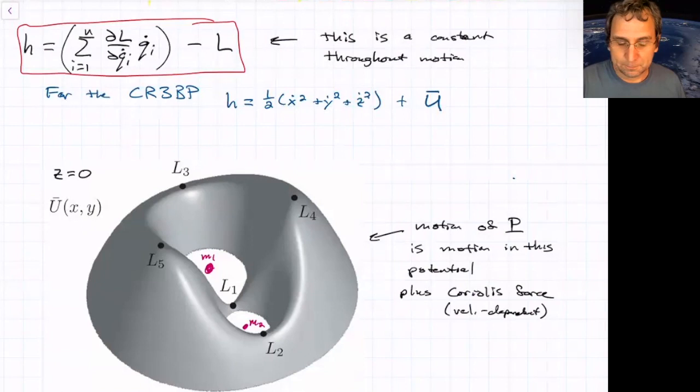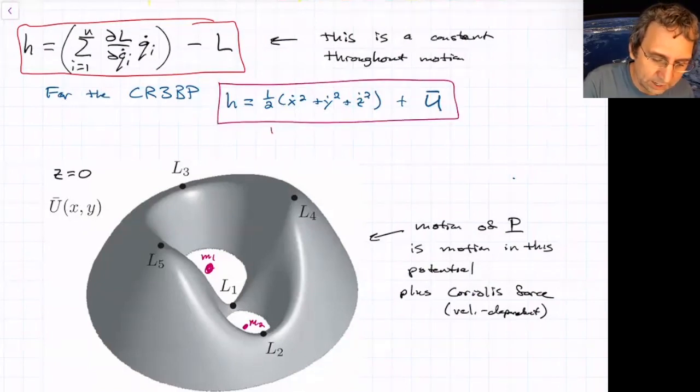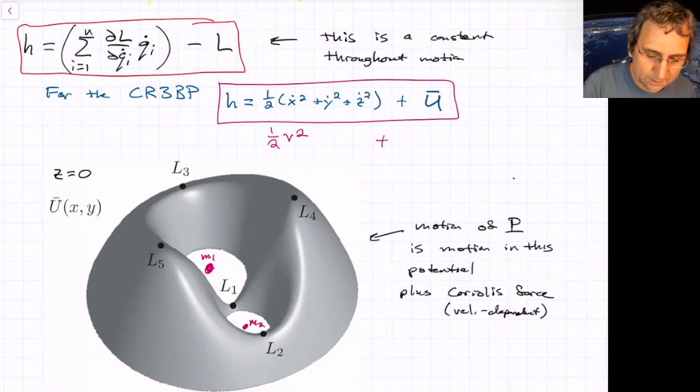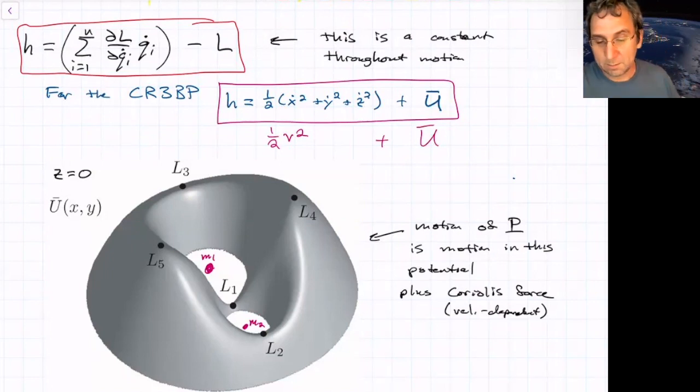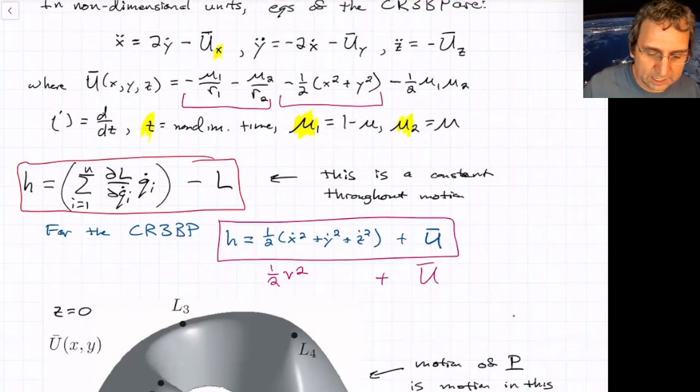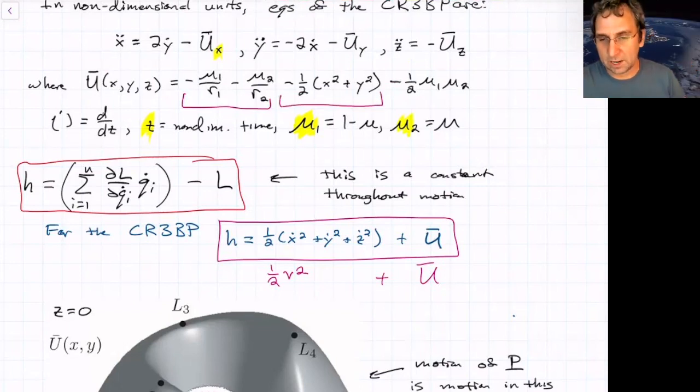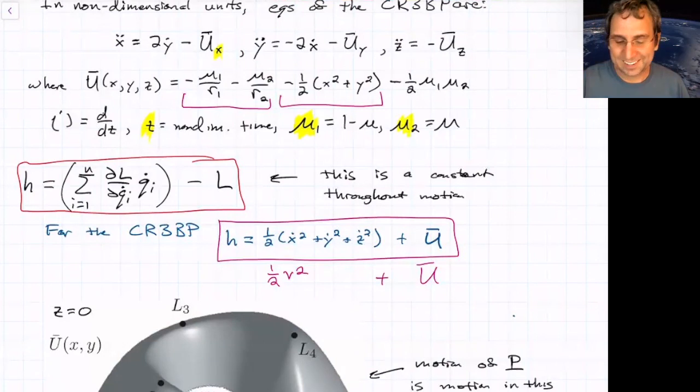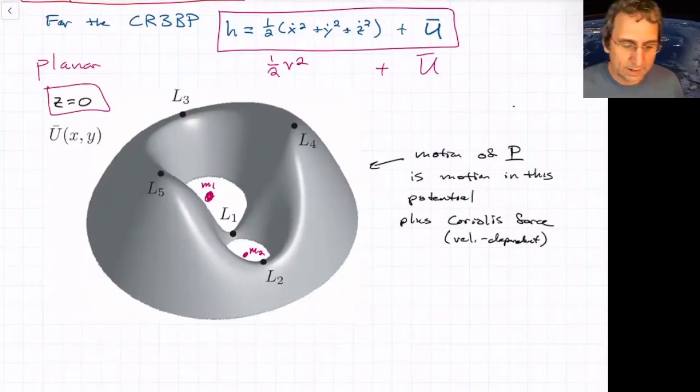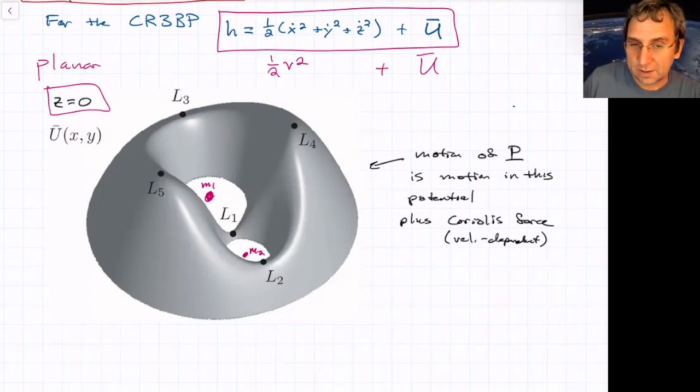For the circular restricted three-body problem, I wrote something incorrect last time. H equals this. It's actually one half the velocity squared, but it's the velocity seen in the rotating frame plus this effective potential. Remember the effective potential? It was the gravity potential. Yes, we had it up here. The gravitational potential part, and then a part that takes into account some rotation effects due to the rotating frame. So the centrifugal force. And then there's this constant that gets put in just by convention. So if you said Z equal to zero, so then we're looking at just the planar problem, and we're to plot the effective potential, it looks like this.